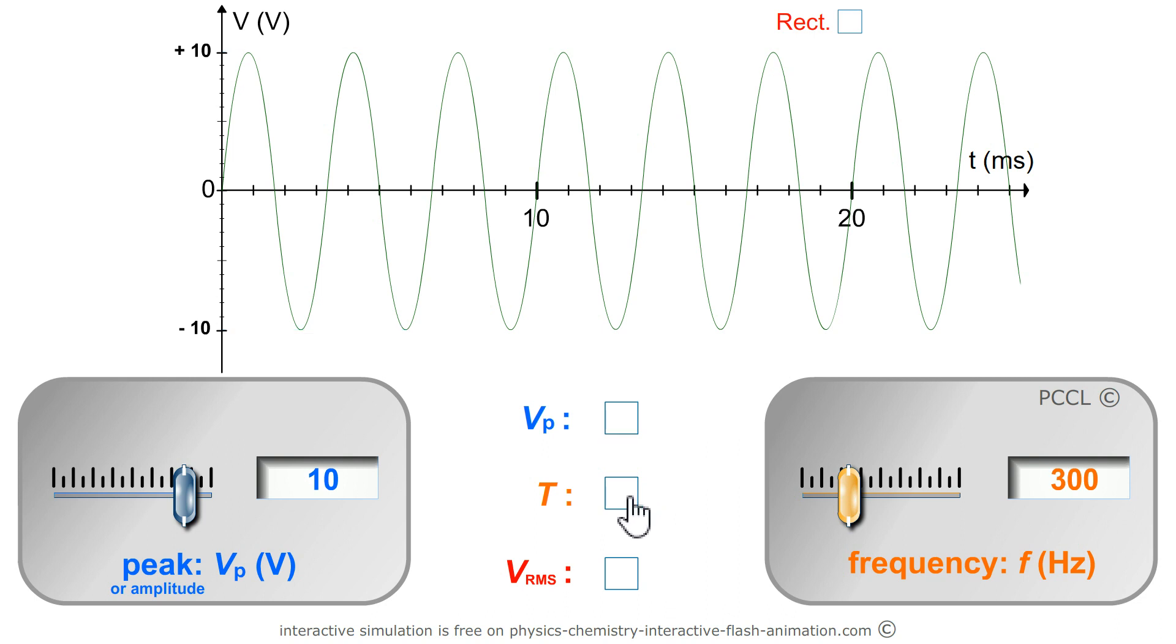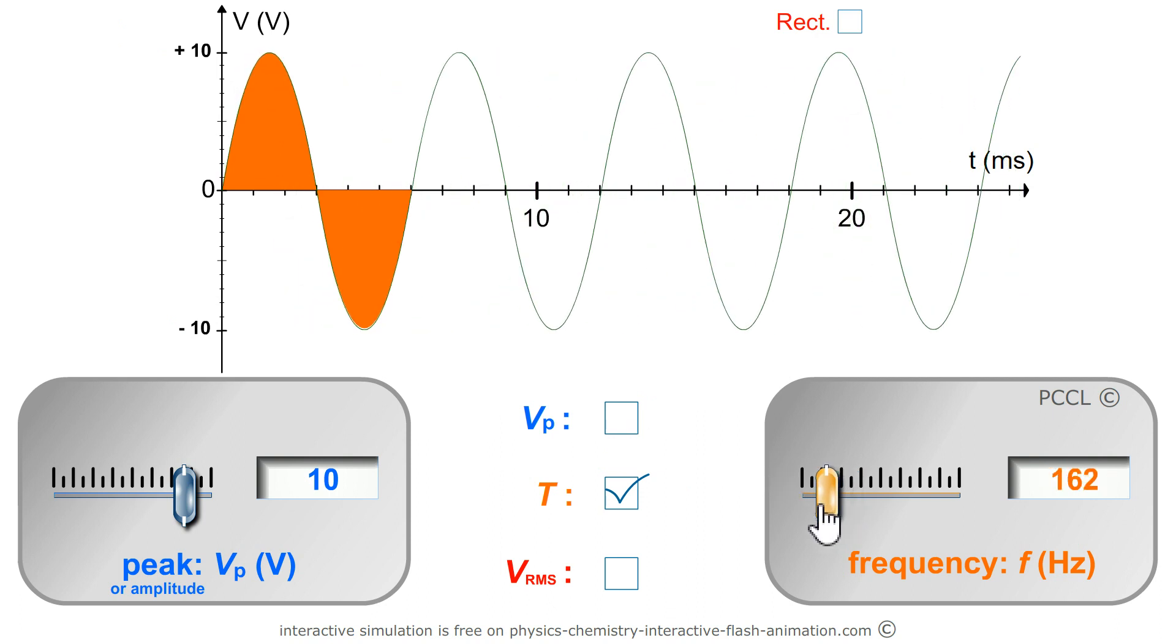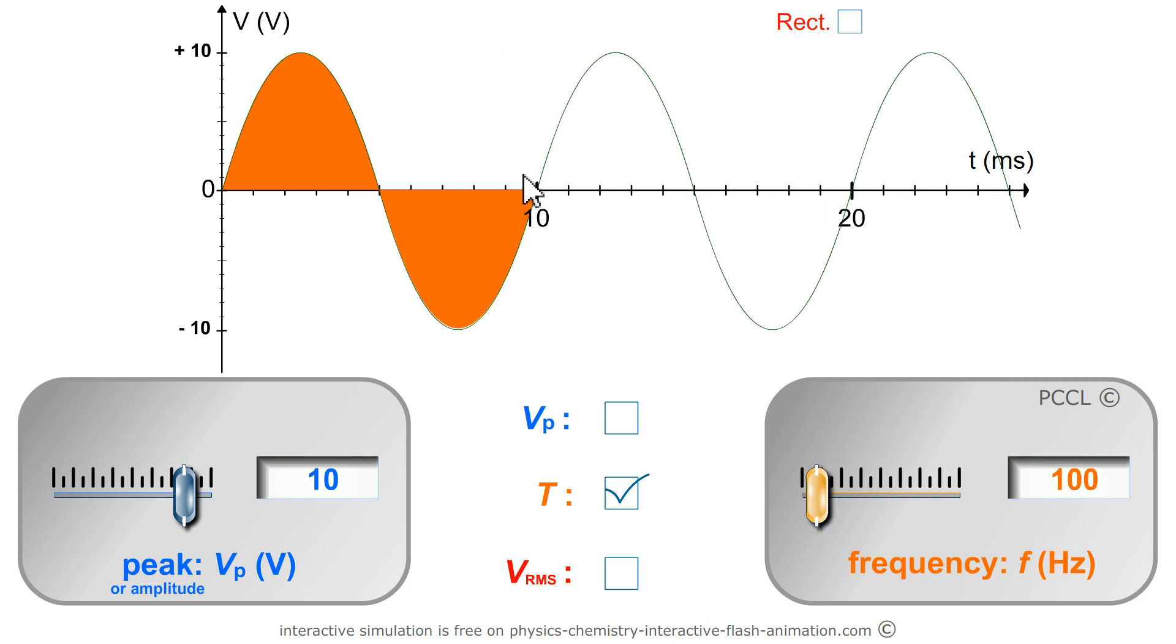The period. It is materialized here by the orange part. It is the elementary pattern, that is to say, which repeats itself identical to itself. One half positive and one half negative.